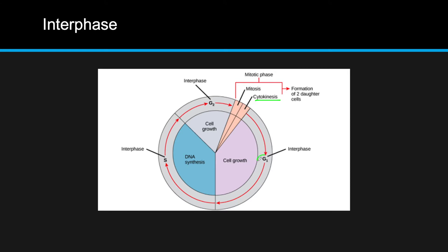The first phase of interphase is the G1 phase, where we have cell growth. The cell prepares for DNA replication and carries out any cellular functions. For example, a pancreatic cell will create hormones, grow, prepare for cell division, and secrete those hormones to provide its required functions.